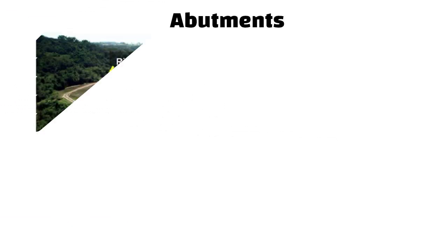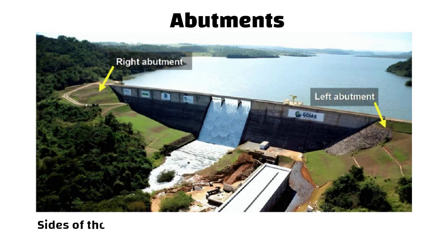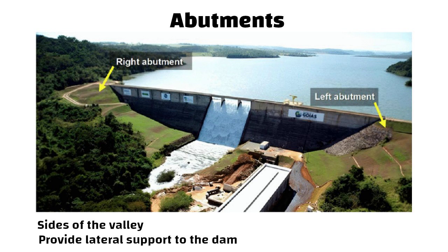Abutments. Abutments are the sides of the valley against which the dam is constructed. They provide lateral support to the dam.